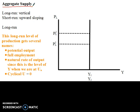When discussing the aggregate supply curve, we really have to talk about two curves. There's the long-run aggregate supply curve, which is perfectly vertical — or, to use economist language, perfectly inelastic. In the long run, it's vertical, and this is more consistent with how classical economists view the world. Then there's the short-run aggregate supply curve, which is upward sloping, and that's more consistent with the Keynesian position.